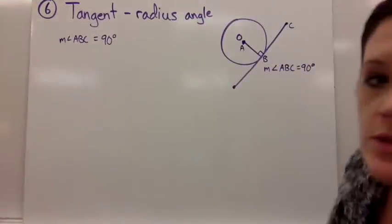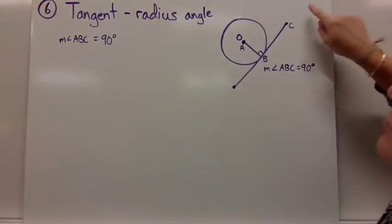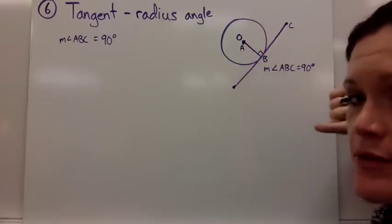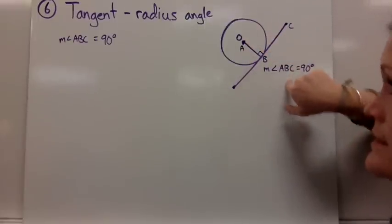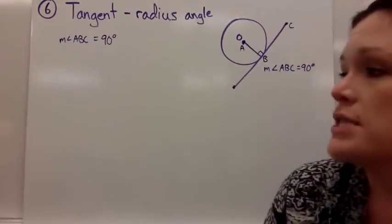We need to include this one in our notes. The tangent radius angle. If you have an angle formed by a tangent and it's connected to a radius, that specific type of angle just equals 90 degrees. So we need to add that one to our notes, and then we'll have a good representation of